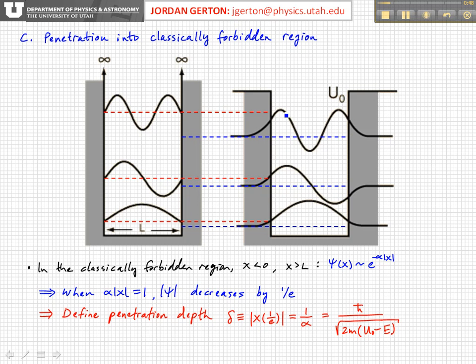the wave functions in the finite well don't have to go to zero. In fact, they can't go to zero at the boundaries because they have to meet smoothly with an exponential decay. So because of that,